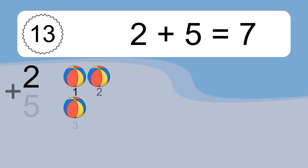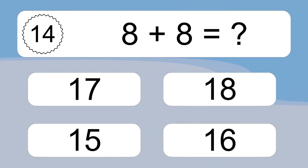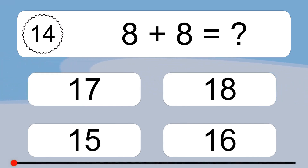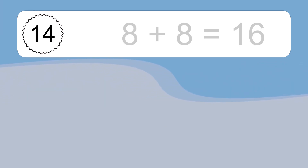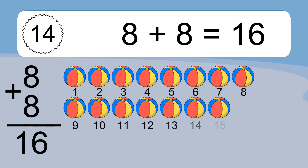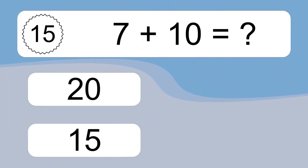2 plus 5 equals what? Two plus five equals seven. Let's count it: one, two, three, four, five, six, seven. 8 plus 8 equals what? Eight plus eight equals sixteen. Let's count it: one, two, three, four, five, six, seven, eight, nine, ten, eleven, twelve, thirteen, fourteen, fifteen, sixteen.